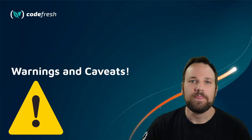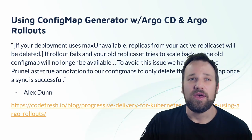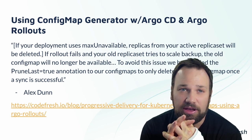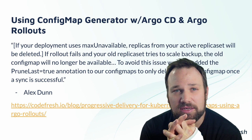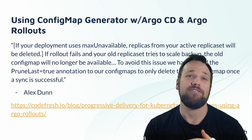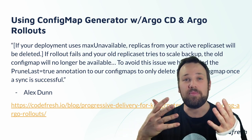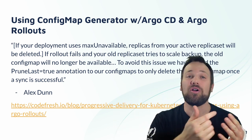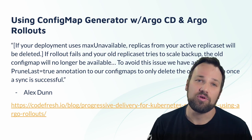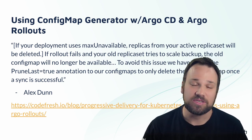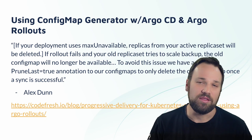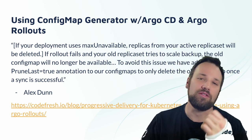There are some warnings and caveats to mention as we wrap up. Using a config map generator with Argo CD and Argo Rollouts: if you have 'max unavailable' set, the available replica set will be deleted. What will happen is if your rollout fails and the old replica set tries to scale back up, the old config map is no longer available because it's been deleted — we deployed a new one. To avoid this issue, you need to add a 'prune-last=true' annotation to your config maps in Argo CD. You can read about that in the blog post that Costas wrote.